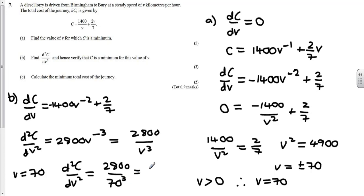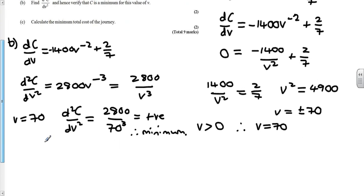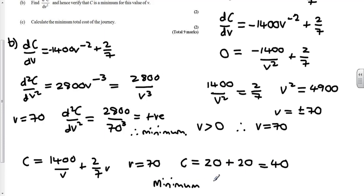And finally, for part C, calculate the minimum cost. Well, we've got the formula and we just need to put 70 in there, which means that we end up with 20 plus 20, 40. So minimum cost is 40 quid.